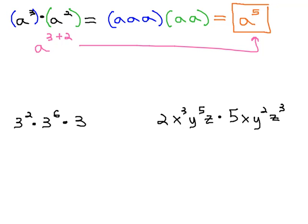So for example, on this problem on the bottom left, where we have 3 squared times 3 to the sixth times 3, we'll first need to remember that if there's no exponent written, we assume there is a 1. We've got a total of 2 3's multiplied, 6 more 3's multiplied, and 1 more 3 multiplied.